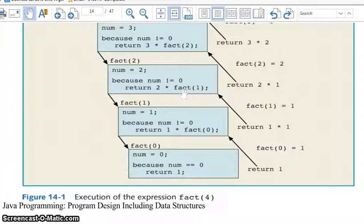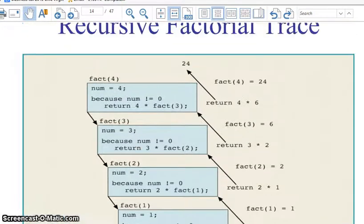Now I'm returning control here to fact of two. I've got a one here to substitute in. Two times one is two. This one closes out. Its variables are destroyed. It's no longer executing. It returns control here. It substitutes a two in here. Three times two is six. Now this one closes out. Its variables are destroyed in memory. Its execution is done. It returns control here. This becomes six times four, which is 24. Now I'm totally finished with all my fact methods. This one closes out. It's done. It returns a 24 back to main.